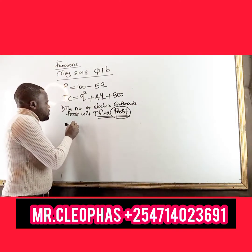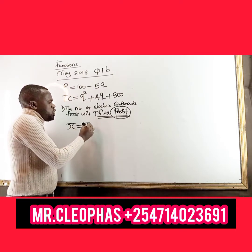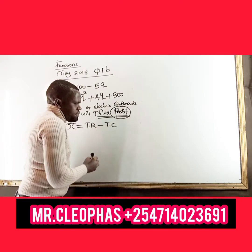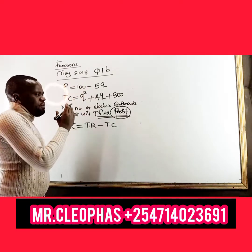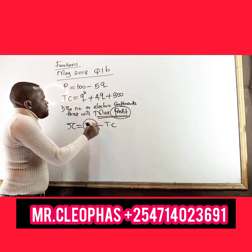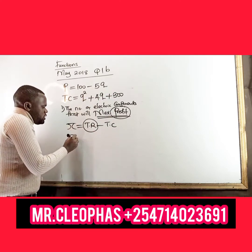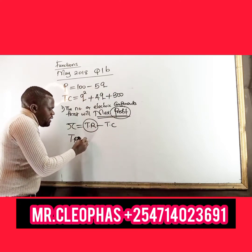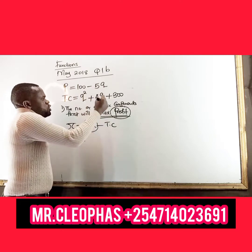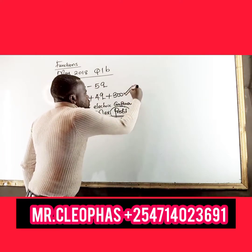Profit is equals to total revenue minus total cost. From what the examiner has given you, ask yourself how to get the total revenue, because it is not given. We can see total cost is given, it is here — the total cost function. So you need to know how to get revenue.